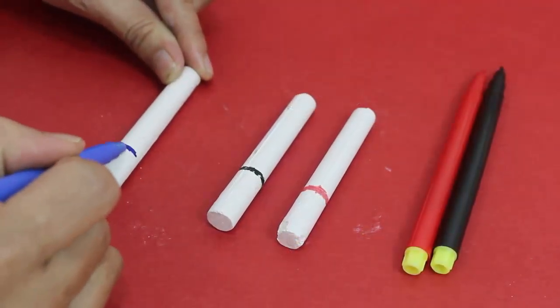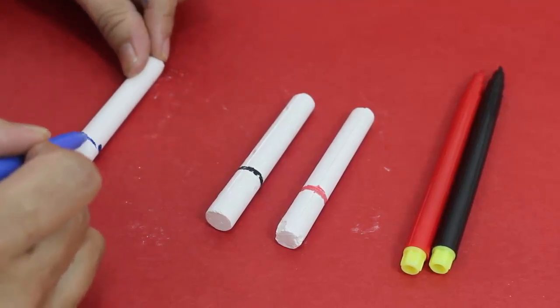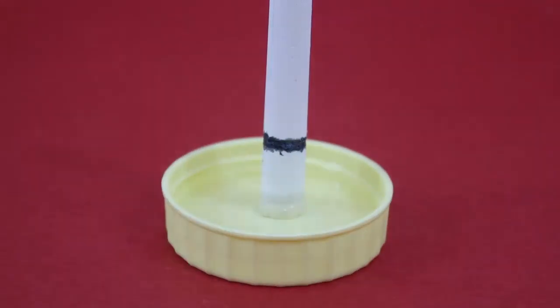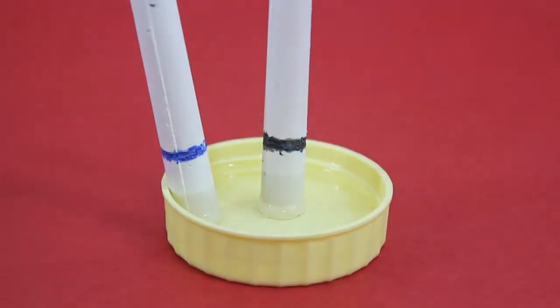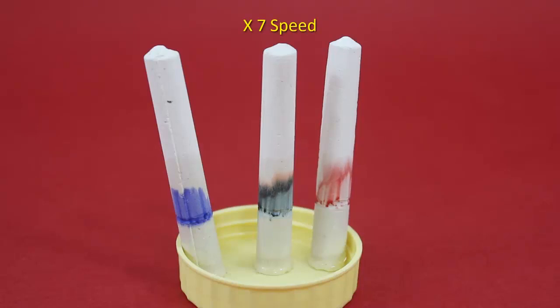You can also try this experiment using chalk pieces. Draw rings on chalk pieces using color sketch pens. If you place the chalk piece in water, you will observe that the various pigments of the color rise on the chalk piece.